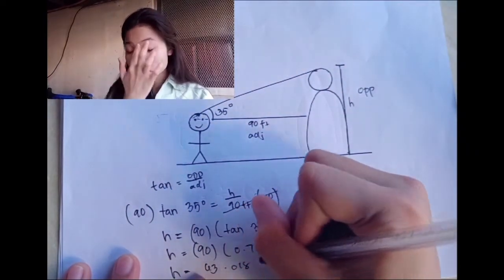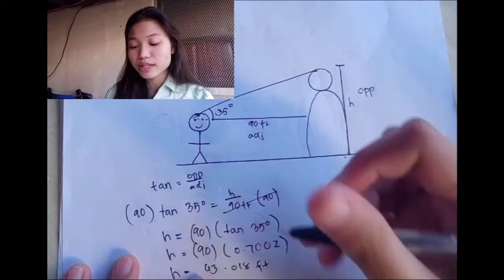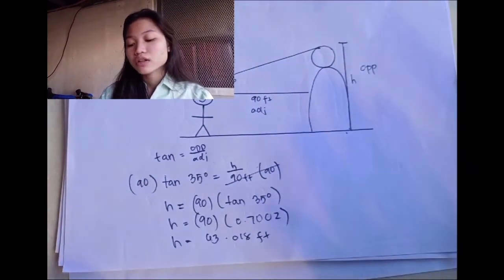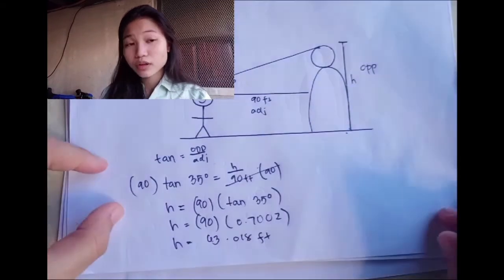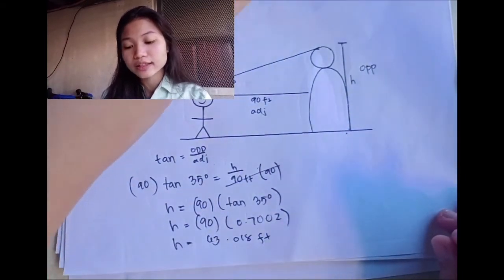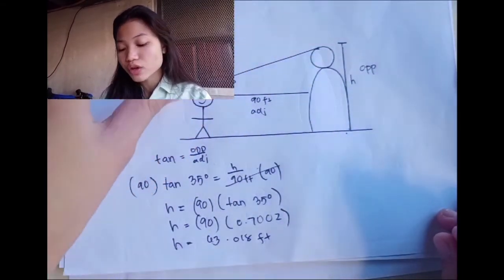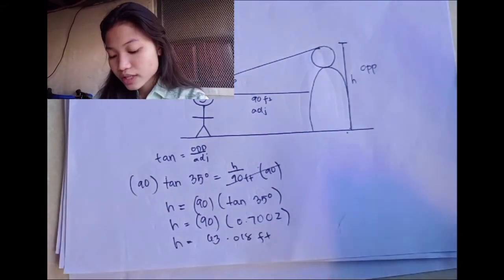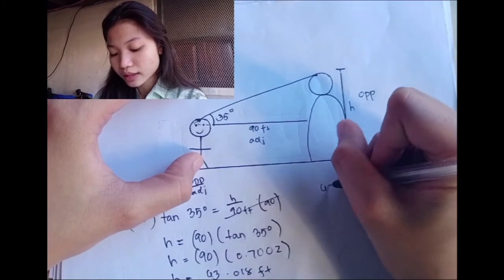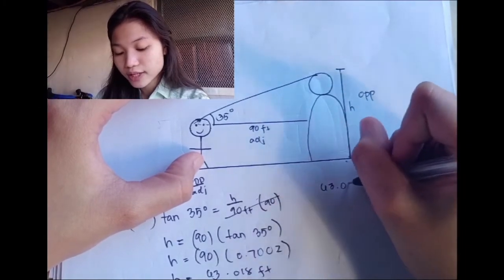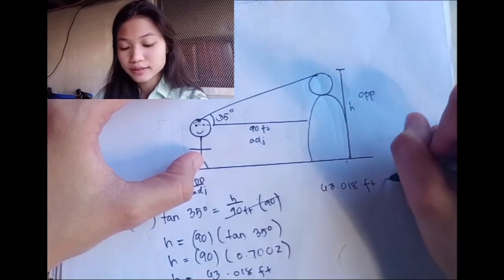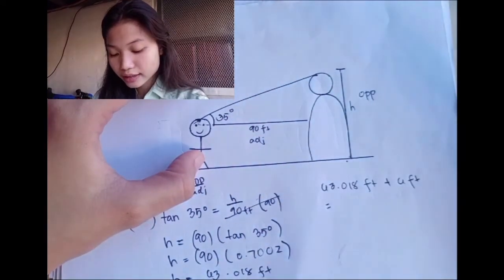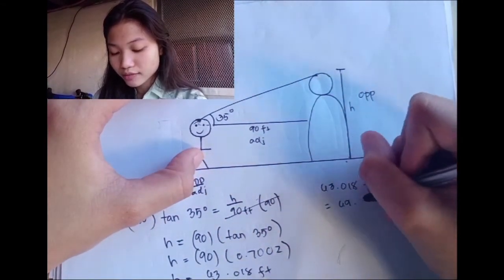This measurement is just from the boy's eye level to the tip of the statue. To calculate the exact height of the statue, we add the height of the boy. So 63.018 feet plus 6 feet equals 69.018 feet.